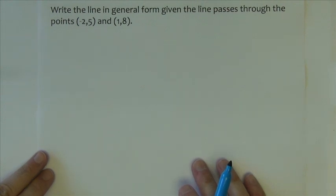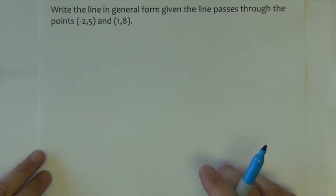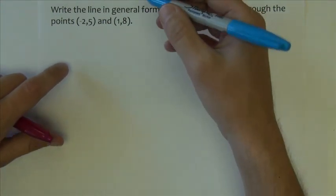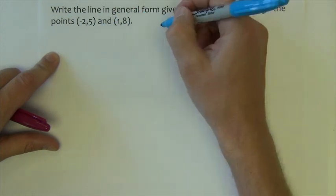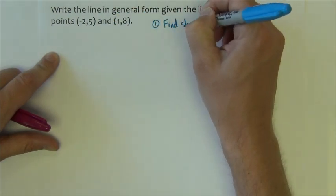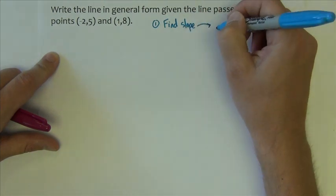Next example asks us to write the line in general form again, just like the last problem, that passes through these two points. So what we are missing is the slope. My first step needs to be find the slope, and we know how to do that.